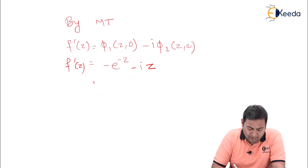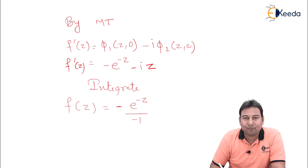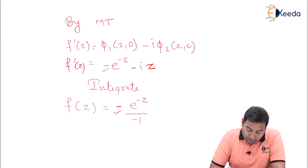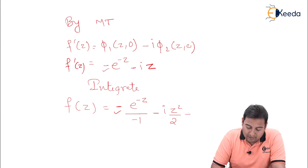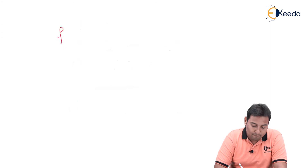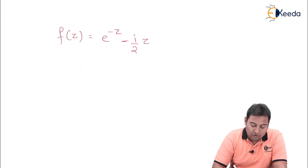What next? Integrate. So f(z) = integral of (−e^(−z) − iz) dz. Integrating: −e^(−z) / (−1) = e^(−z), and integrating −iz gives −iz²/2. So f(z) = e^(−z) − (i/2)z² + c.